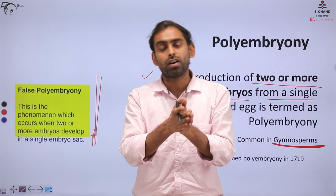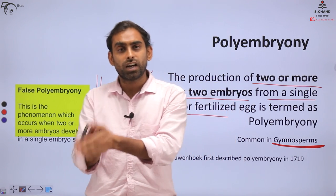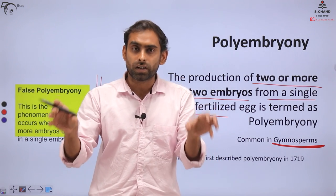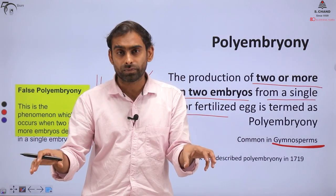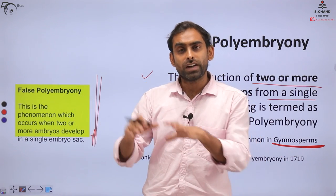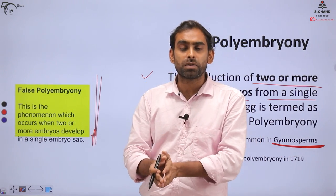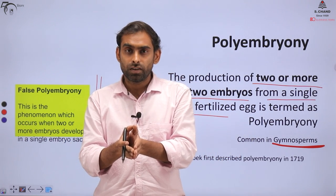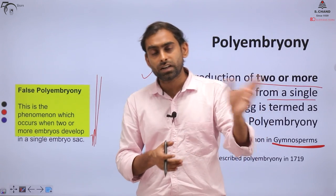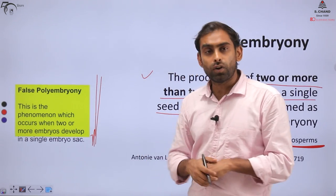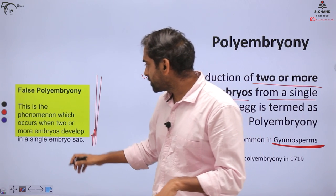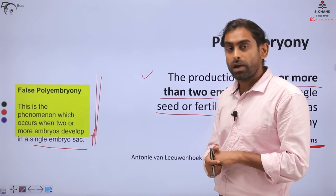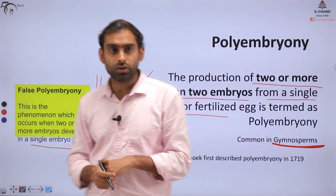You can imagine this as analogous to identical twins and fraternal twins. The one generated because of fertilization of two different ova would be a fraternal twin. Whereas identical twins originate because of the division or separation of a single fertilized zygote. Similarly, fraternal twins are analogous to false polyembryony, and identical twins are analogous to true polyembryony arising from a single embryo sac.